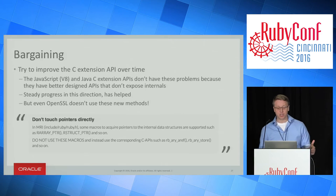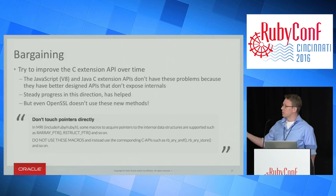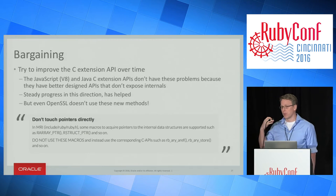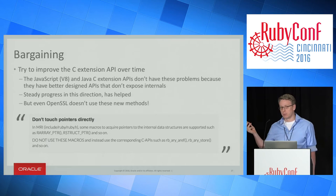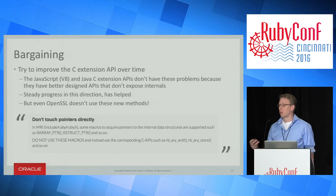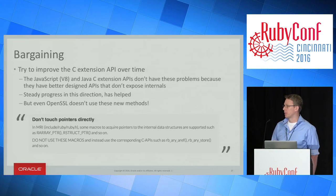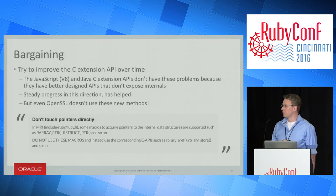We can try to improve the C extension API from MRI over time. JavaScript — as in V8 — and Java C extension APIs don't really have these problems because they were designed with knowledge of this problem ahead of time. They have better-designed APIs which don't expose internals. There is steady progress toward doing this in MRI and it has helped, but even OpenSSL doesn't use those better interfaces. From the C extension documentation it tells you: don't touch pointers directly, don't use RARRAY_PTR, don't use RSTRING_PTR. And if people didn't use them, they wouldn't be so much of a problem.